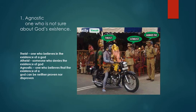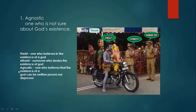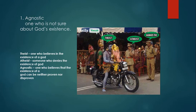First is Agnostic. Agnostic is one who is not sure about God's existence — a person who does not believe in God. Theist is one who believes in the existence of God. Atheist is someone who denies the existence of God. Agnostic is one who believes that the existence of God can be neither proven nor disproven. So there is a difference: atheist denies the existence of God entirely, while agnostic is somewhere in the middle.